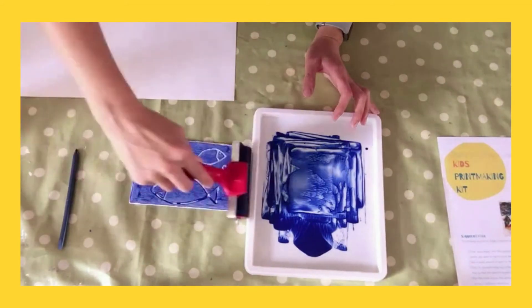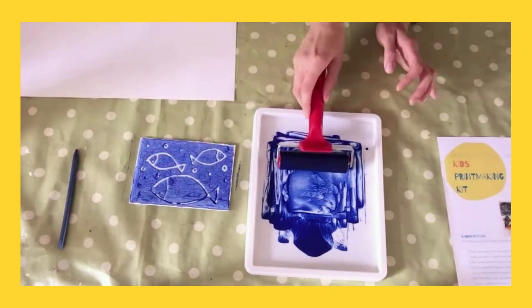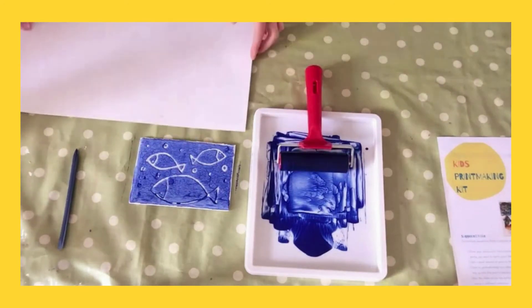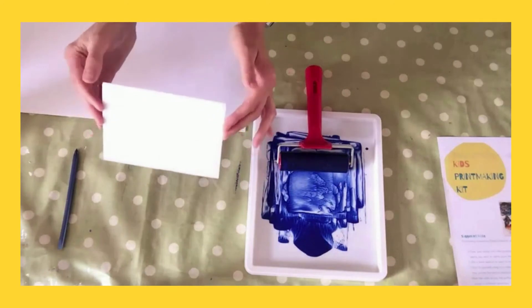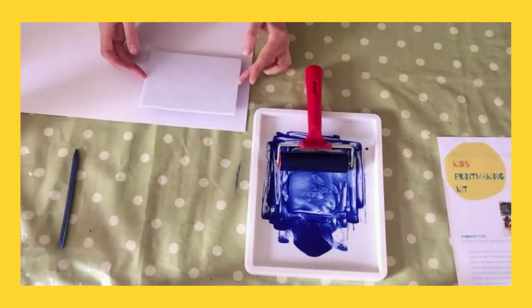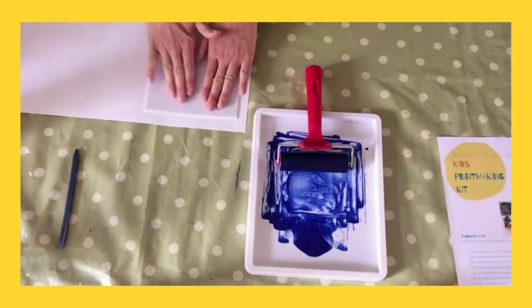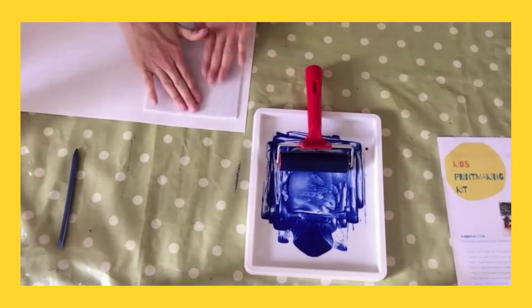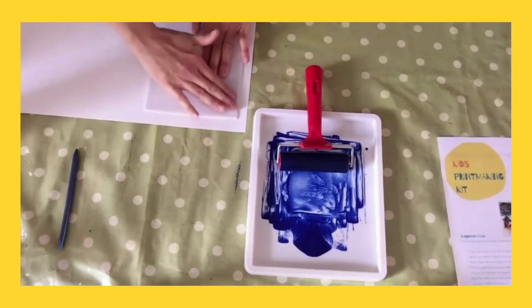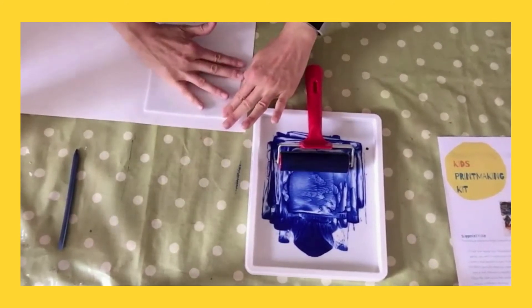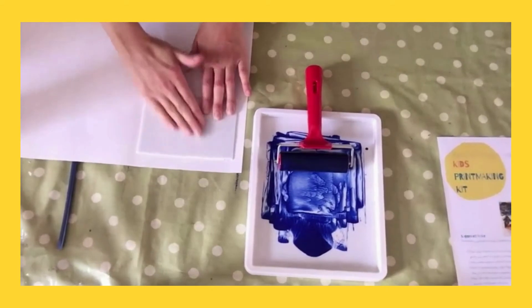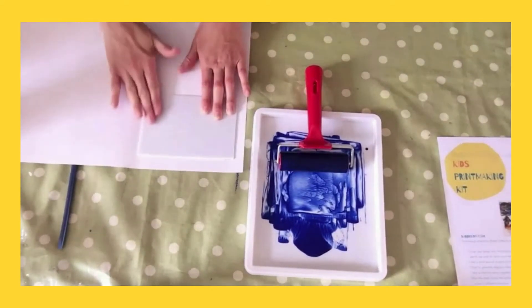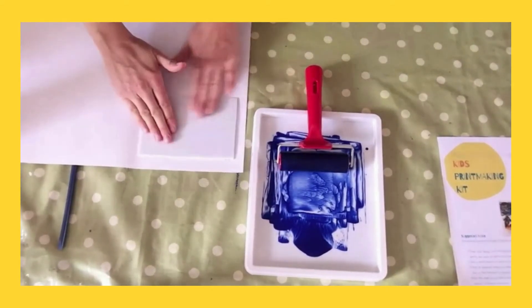So one last ink up. Okay, I'm happy with that. And then you want to take your paper, pick up from the sides very carefully. I'm going to turn over, place onto the page, and then press down lightly and just rub all over. So nice and evenly across all of the sheet.